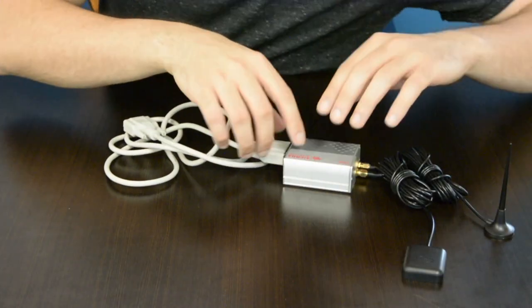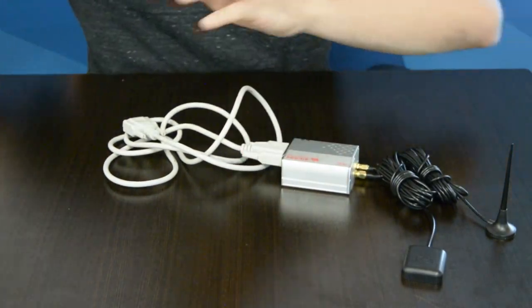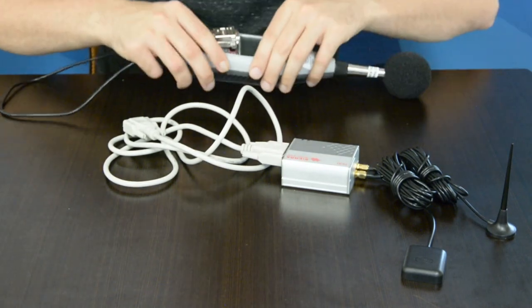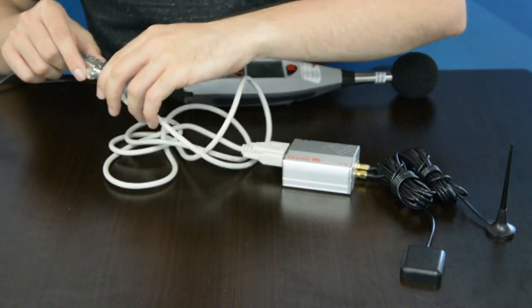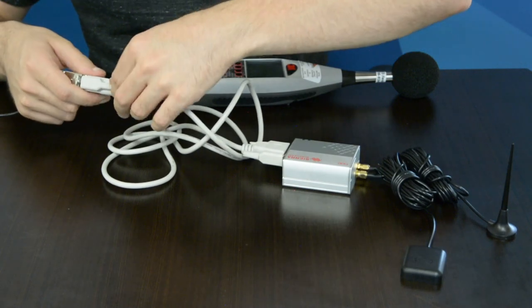Now that we've connected the serial cable to the FX-30, we'll take the device, the SoundPro microphone, and connect the serial cable on the FX-30 to the input of the microphone.